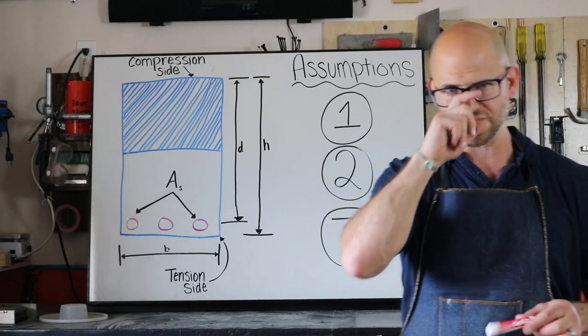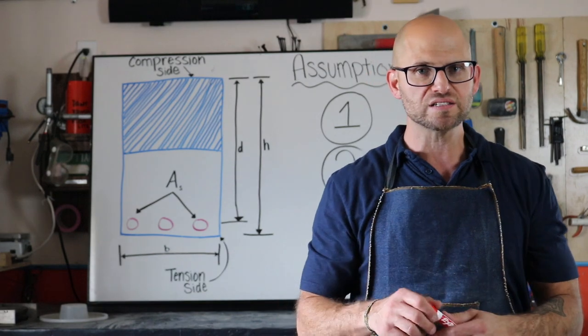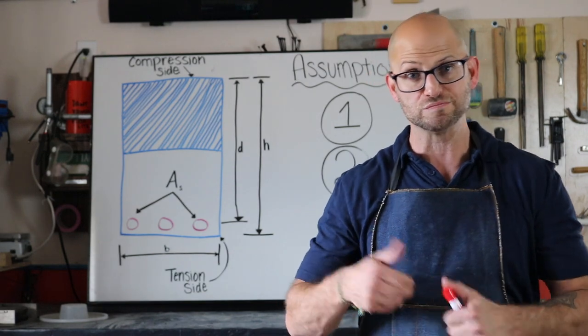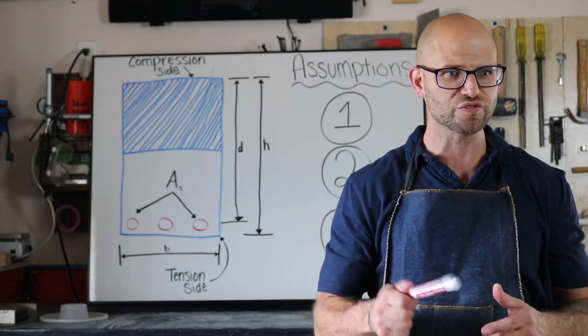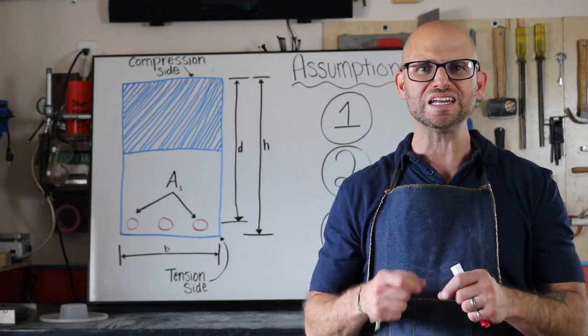So the three assumptions that we use when going through the design and analysis of a reinforced concrete beam or even a concrete structure, the first one, strain distribution is assumed to be linear.